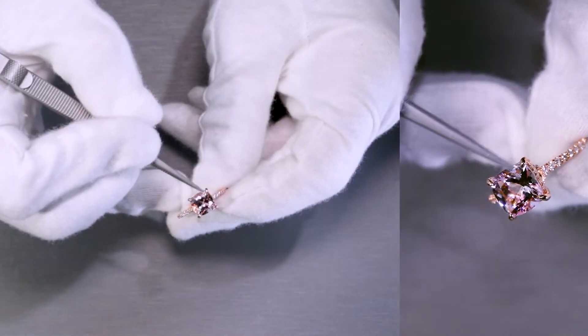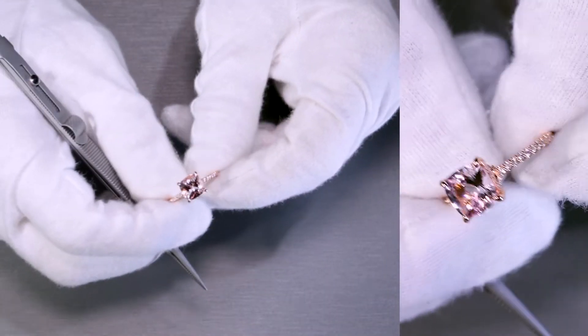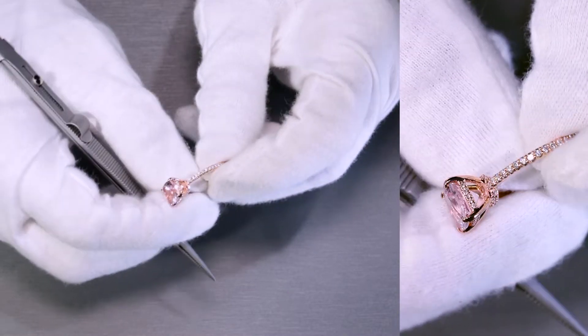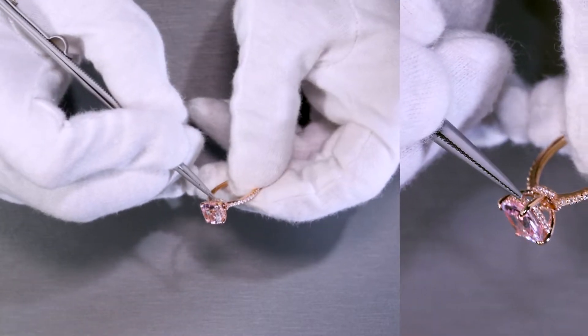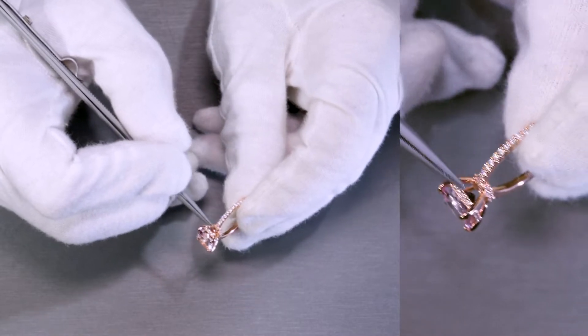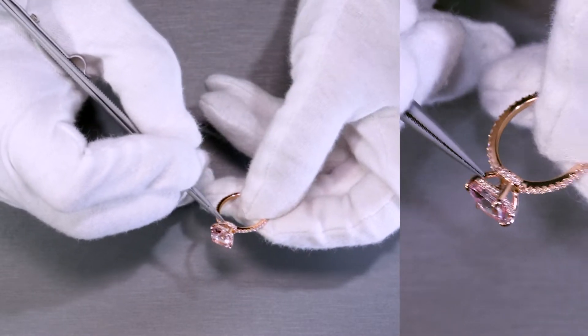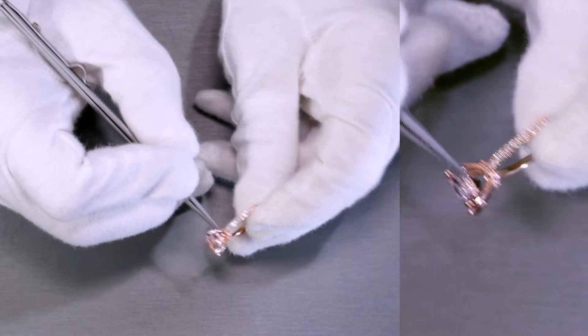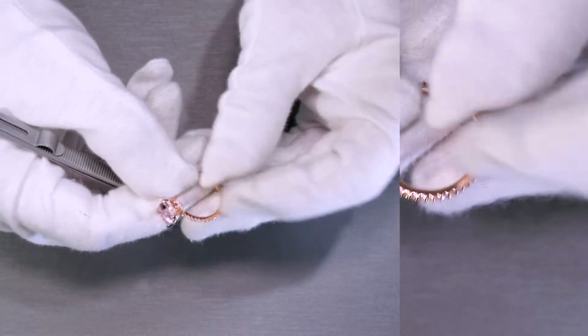Now, that's set on four beautiful 18K rose gold prongs, right on top of a diamond rail or a hidden halo. So, if you take a look here, it looks like a halo, but on the side, or right below the center stone, rather, it's also called a diamond rail.